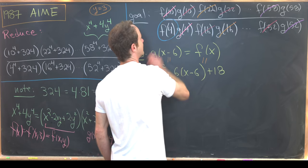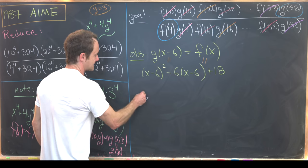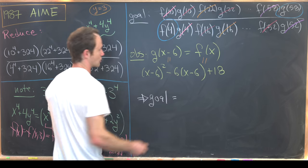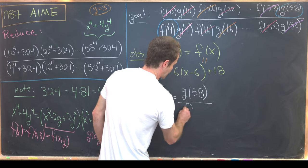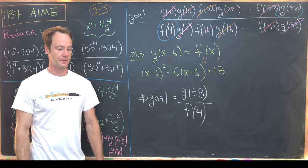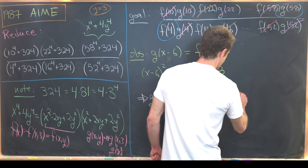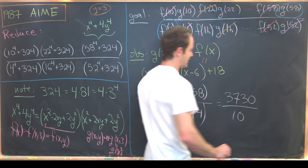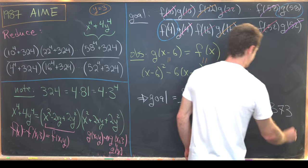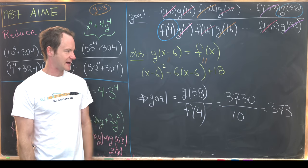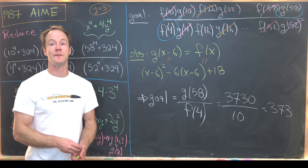We're left with an f of 4 in the denominator and a g of 58 in the numerator. So that tells us that our goal object is equal to g evaluated at 58 over f evaluated at 4. But now that's just simple arithmetic. And what we'll see is that the numerator is 3730 and the denominator is 10. So canceling that out, we see that our final answer is 373, which is in fact a prime number, which I think is pretty nice that this all ends in a three-digit prime number. And that's a good place to stop.